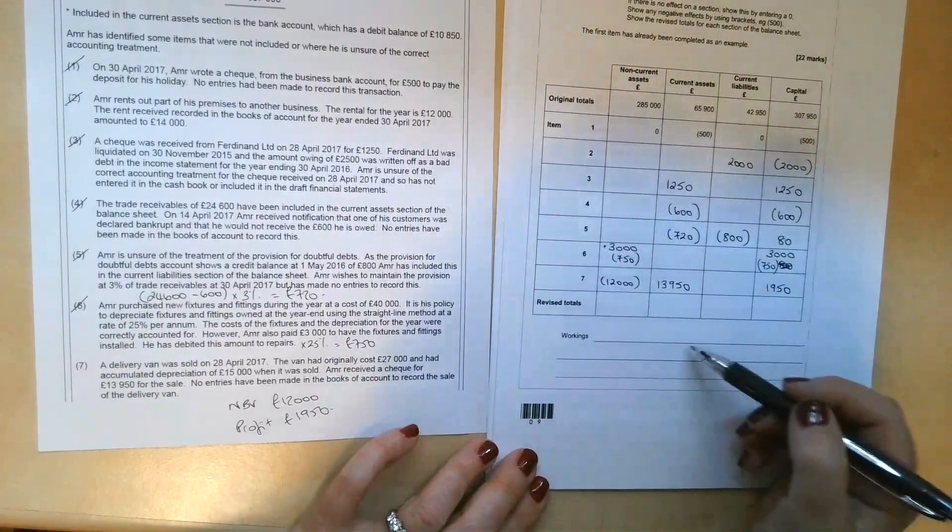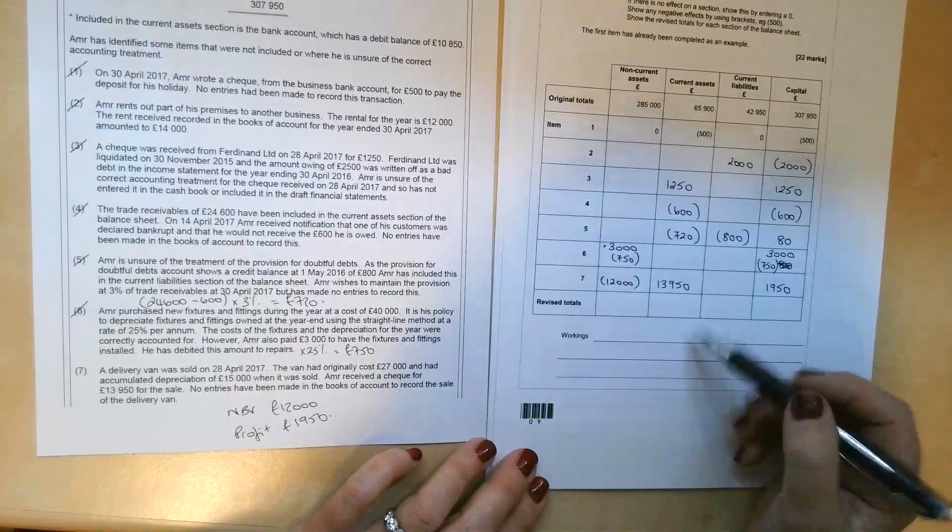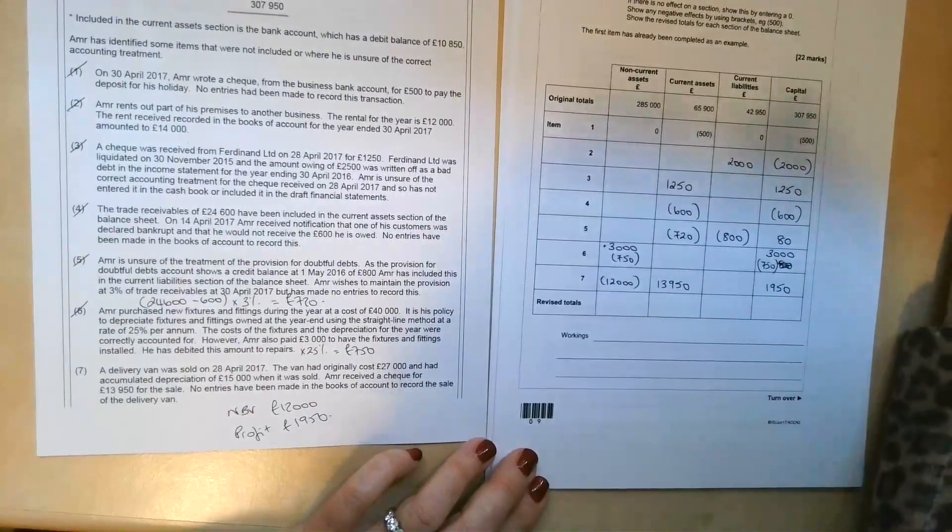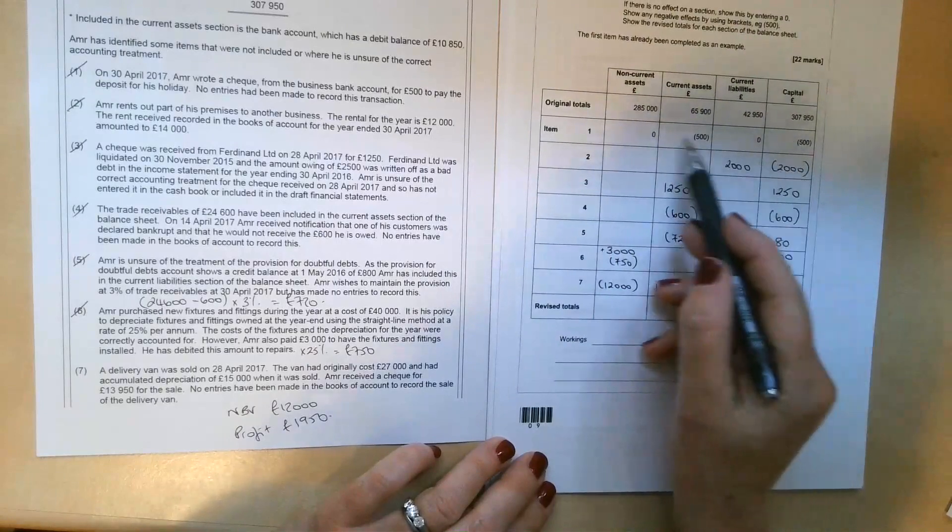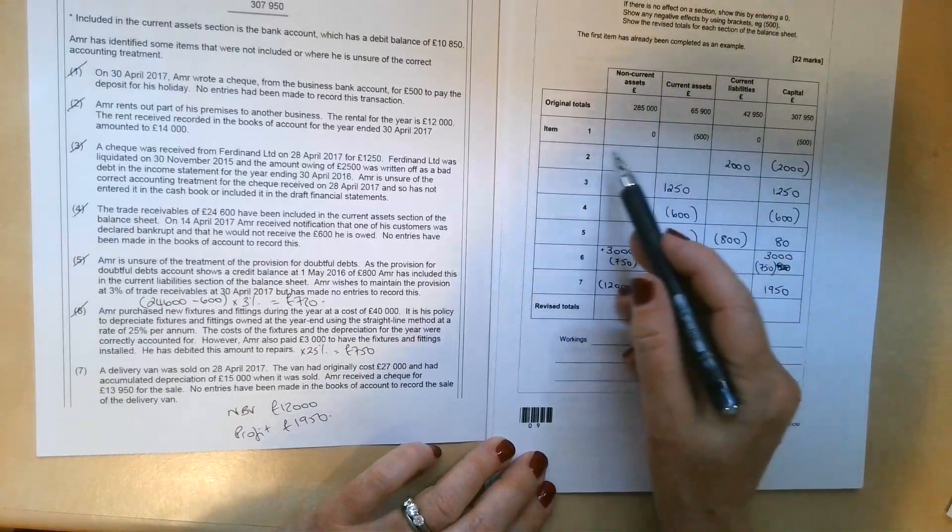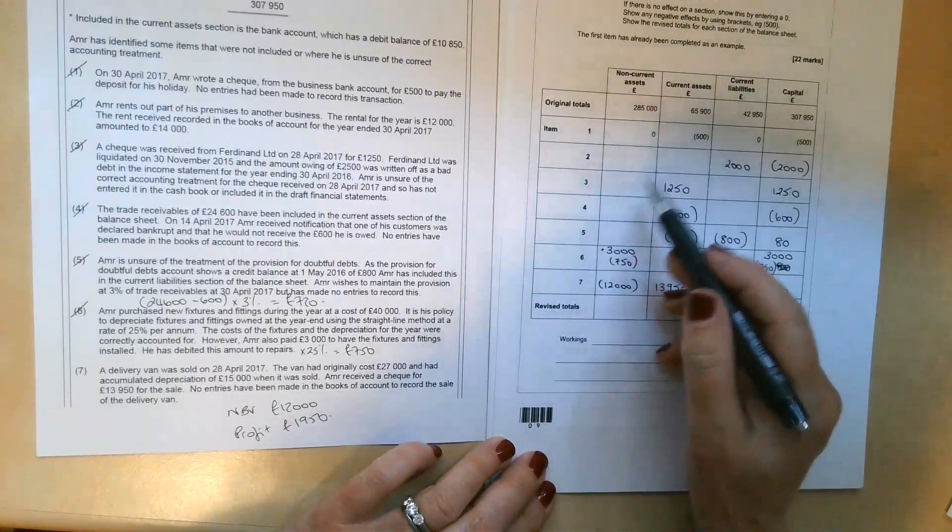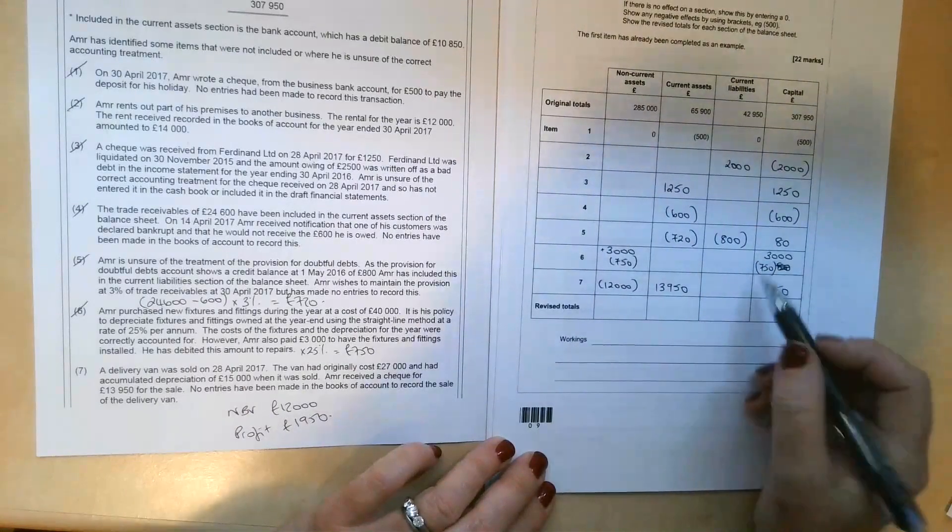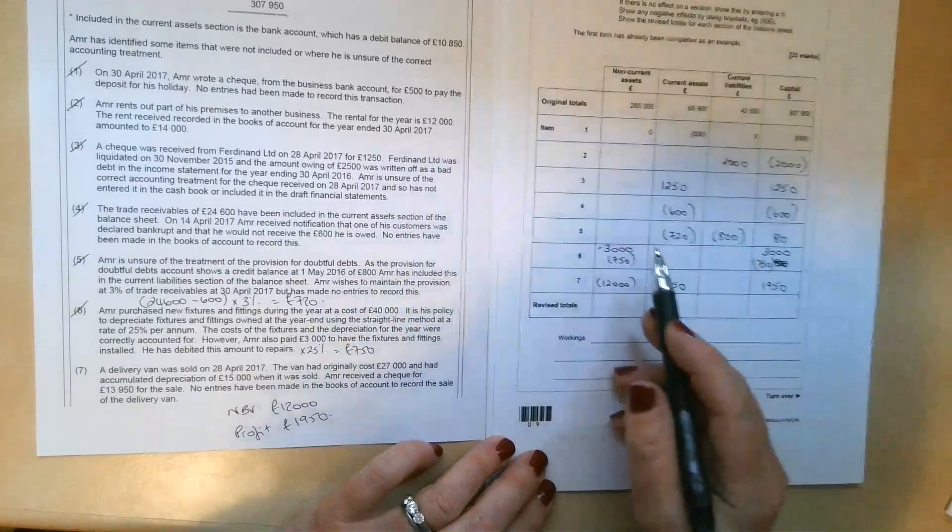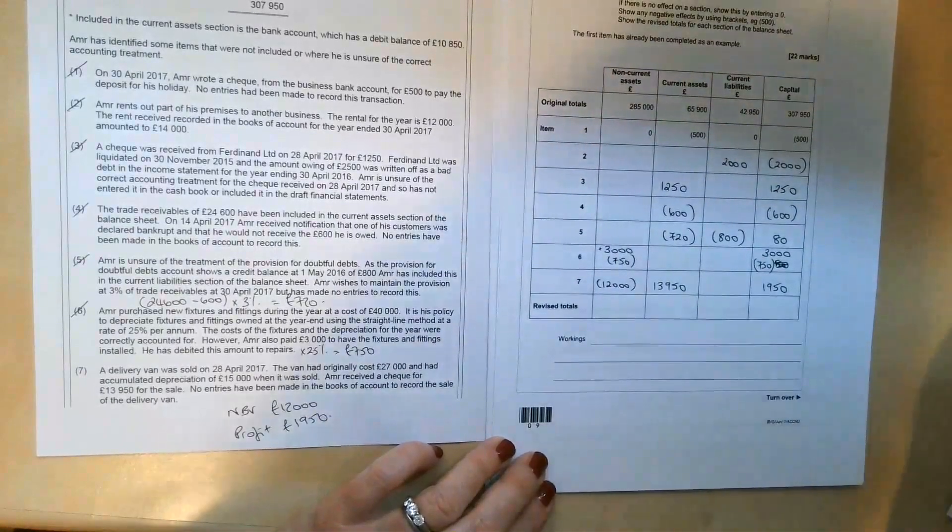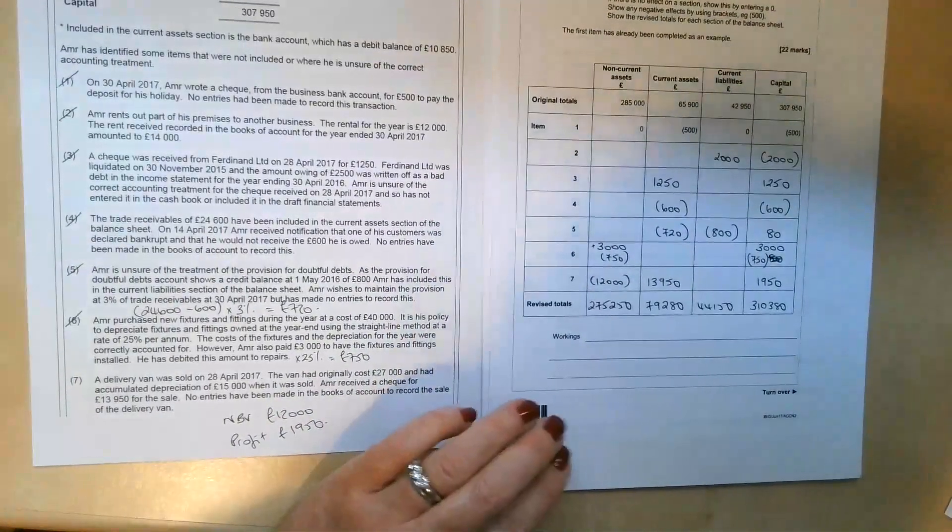So the only thing we need to do now is just to add the totals up to come up with some revised figures. When we're doing this, don't forget to add in the figures that have already been done for you. Very often I see students that have just completed, you know, just done the additions and subtractions on the figures that they've written in, in their own handwriting. Don't forget to include the things that have already been put in for you.